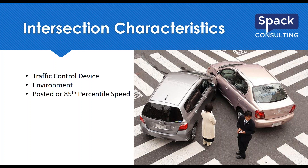The next thing we look at is the speed limit — this can be the posted speed limit or the 85th percentile speed. It's important to note that while a lot of us rely on Google Earth and Google Images to figure out lane configuration and speed limits, it is always good to go out and do a field visit to see what's actually in the field. It can change quickly and there will often be discrepancies between Google Earth and reality. Last, we need the total entering volume and, for Minnesota, the volume on the highest leg.